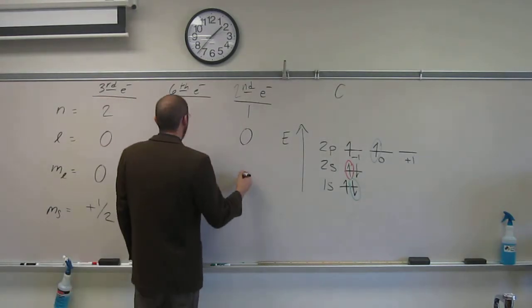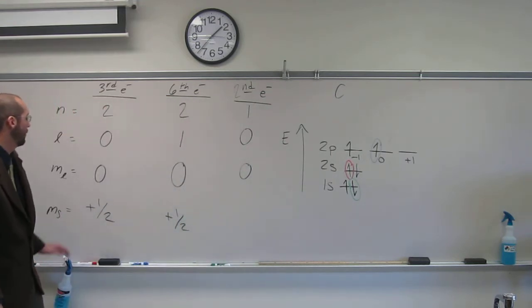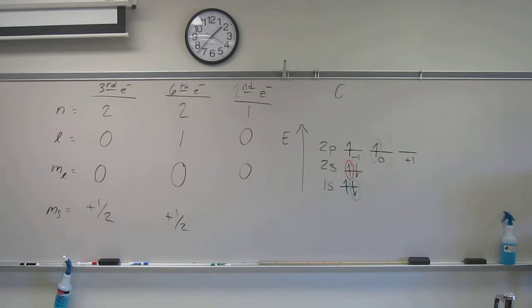m sub l? 0 as well. Our m sub l's are pretty lame in this video. But this time, it's the second electron to go in, so we would describe it as negative 1 half.